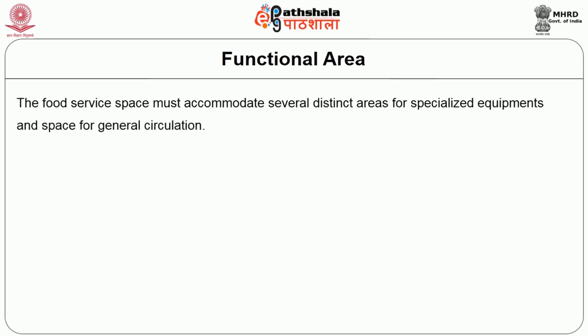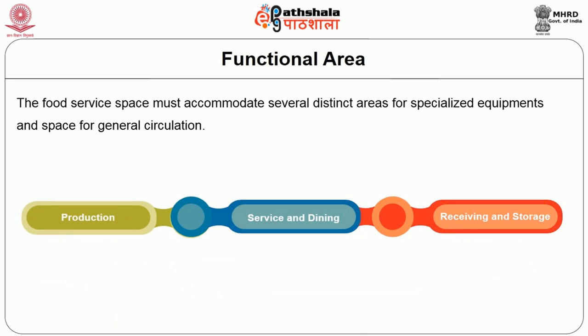The food service space must accommodate several distinct areas for specialized equipment and space for general circulation. These areas include production, service and dining, and receiving and storage.